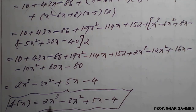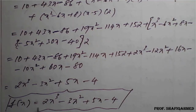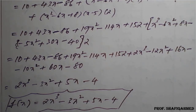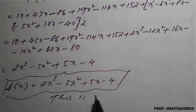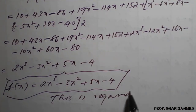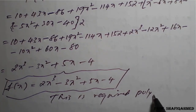For verification, you can check: substitute any x value from the given table into this equation and confirm it matches the table's f(x) values. This is the required polynomial.